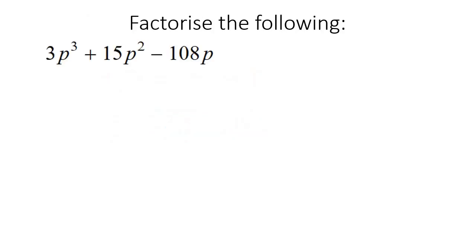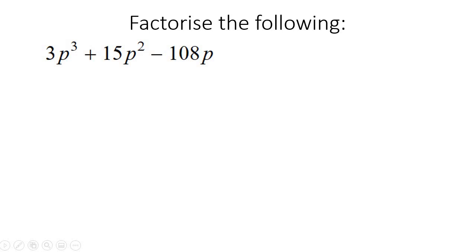So here's our first example. Look at the three terms — at the moment it doesn't even look like a trinomial. Remember, with a trinomial only two of the terms are supposed to have variables. But this one has a variable in all three terms, so you might think this isn't a trinomial, and that's correct, it's not. But whenever you do factorizing, always take out a common factor first. The number 3 can go into 3, 15, and 108, so we can take that out as a common factor.